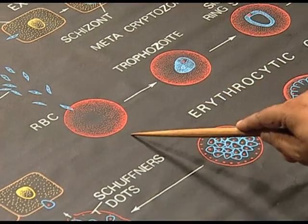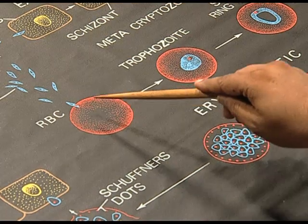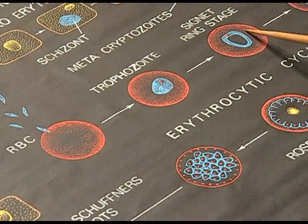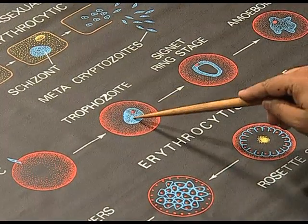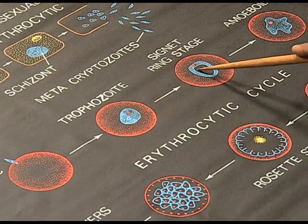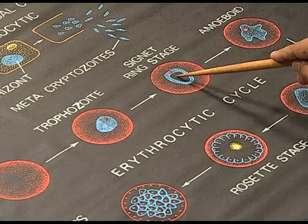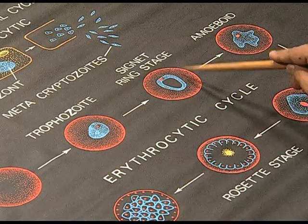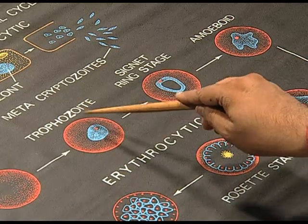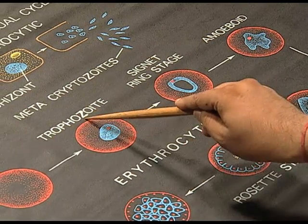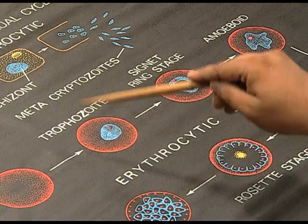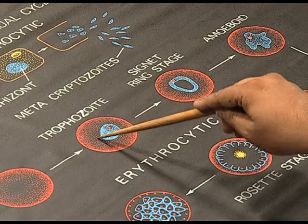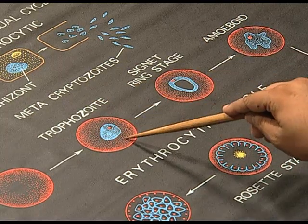Now we come to the erythrocytic cycle. After the invasion of RBC, they will develop into trophozoite and ring stages. In the trophozoite stage there is dense cytoplasm, whereas in the ring stage there is a vacuolar structure and the cytoplasm is shifted towards the periphery. The trophozoite is related to trophic, meaning nutritional level — this is the feeding stage of Plasmodium, and it feeds on the hemoglobin present inside the RBC.